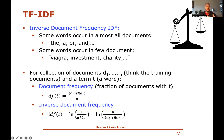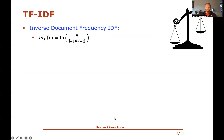Then the inverse document frequency is one over this document frequency, and you take the natural log of it. So the inverse document frequency, written out, is the log of the total number of documents divided by how many of them contain the term T. It's a function of T, giving a weighting that describes the log of N over the number of documents containing word T. That's the inverse document frequency.